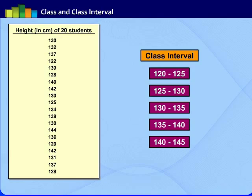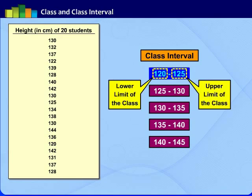Here the number of classes is neither too big nor too small. That is the optimum number of classes is between 5 and 10. We need to group the data in such a way that classes are divided equally in optimum number. In class 120 to 125, 120 is called the lower limit of the class and 125 is the upper limit of the class.